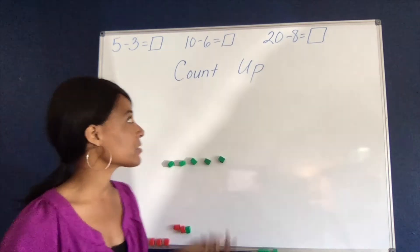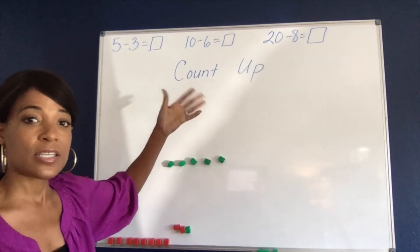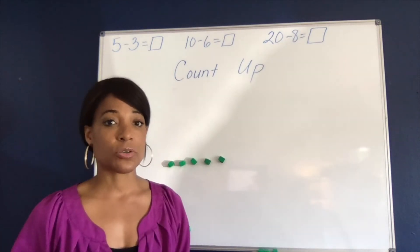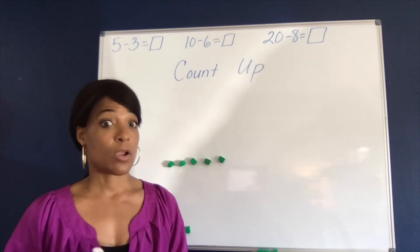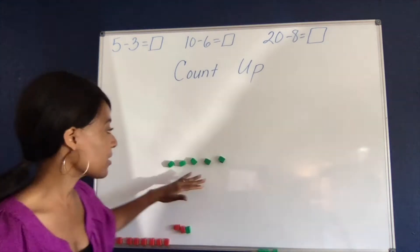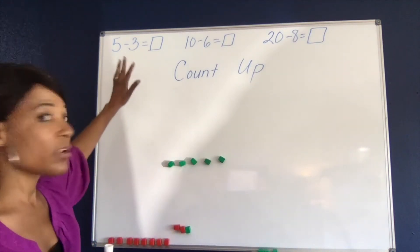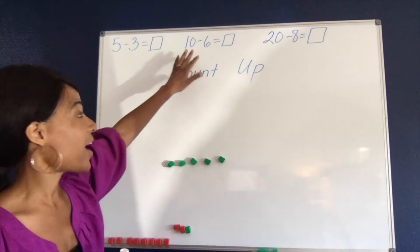The strategy is called counting up. Counting up is something that students can do if they've had an opportunity or multiple opportunities to count objects and learn their facts to 5 and 10.